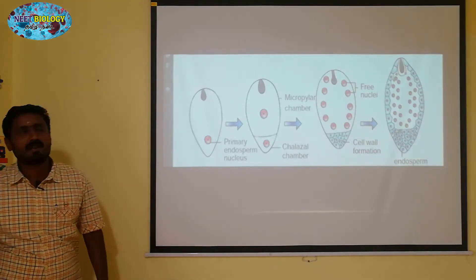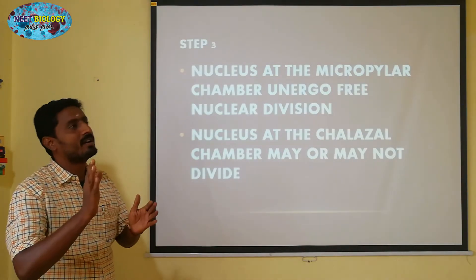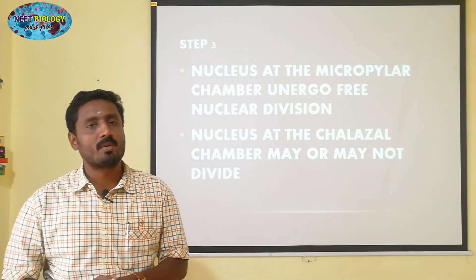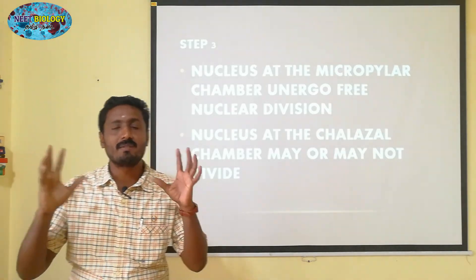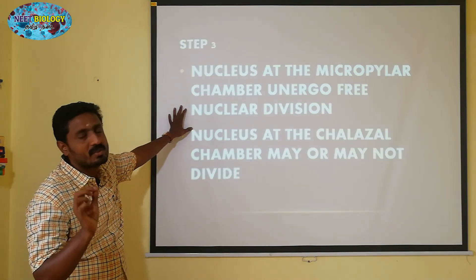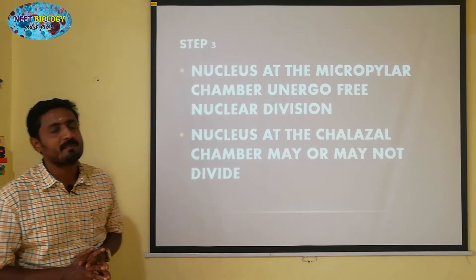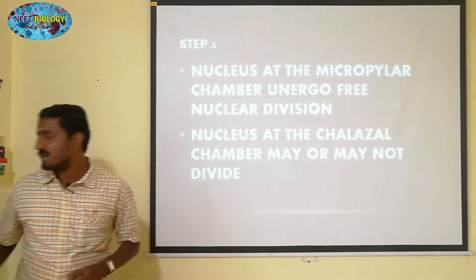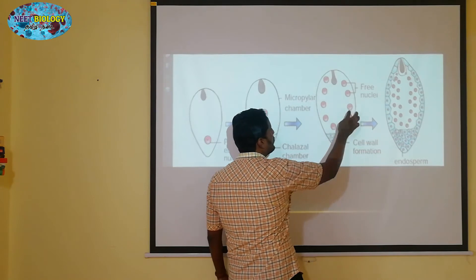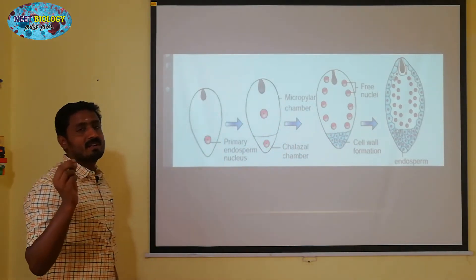Step 3: The nucleus at the micropylar chamber undergoes nuclear division. If you have a nuclear endosperm, you can divide the cell. Free nuclei are produced — the nuclei in the micropylar chamber are free nuclei, with no cell wall formation.